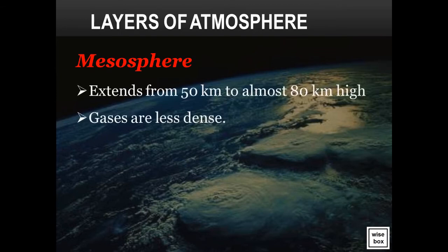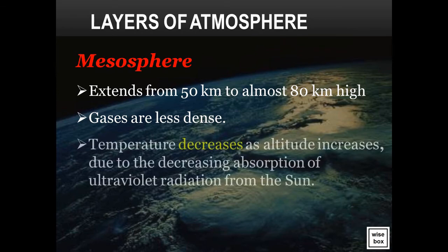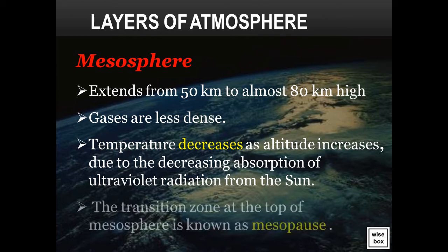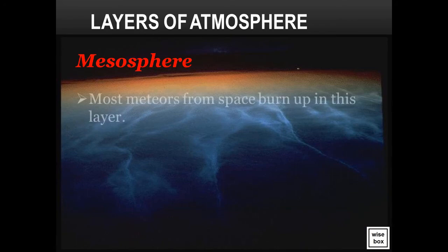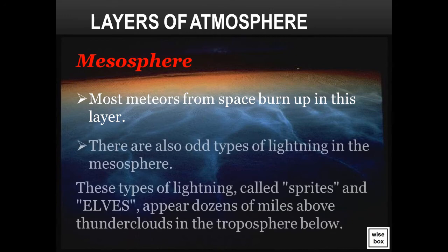The mesosphere extends from 50 kilometers to almost 80 kilometers high. In this layer the gases are less dense. Temperature decreases as altitude increases, due to the decreasing absorption of ultraviolet radiation from the sun. The transition zone at the top of the mesosphere is known as the mesopause. Most meteors from space burn up in the mesosphere. There are also odd types of lightning in the mesosphere, called sprites and elves, which appear dozens of miles above thunderclouds in the troposphere below.